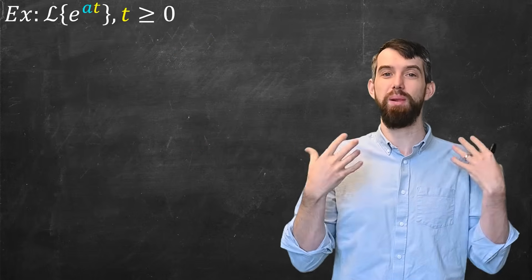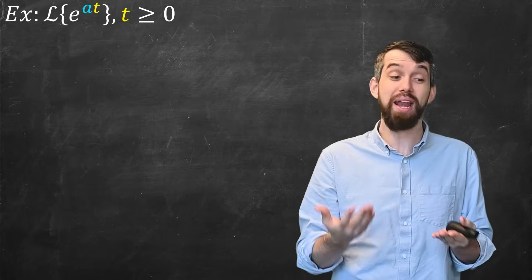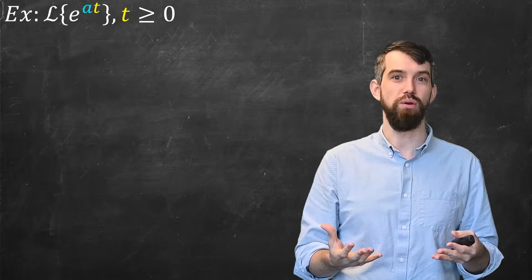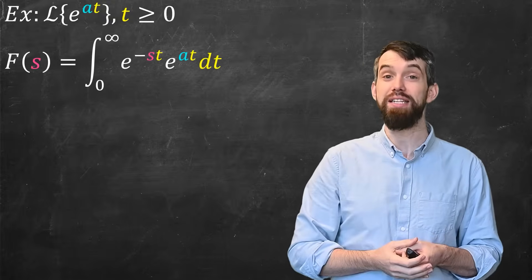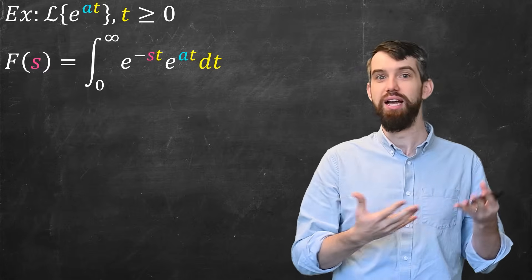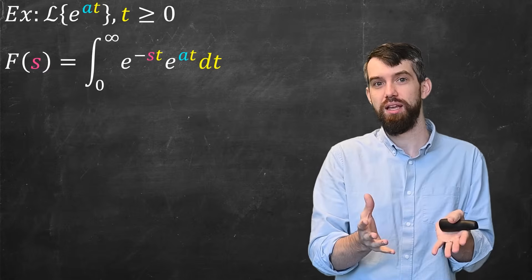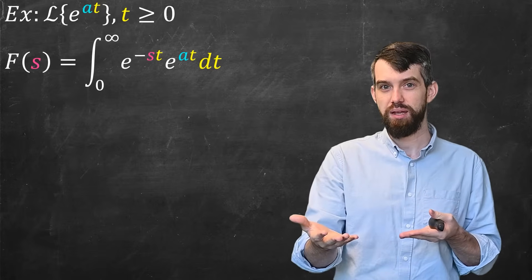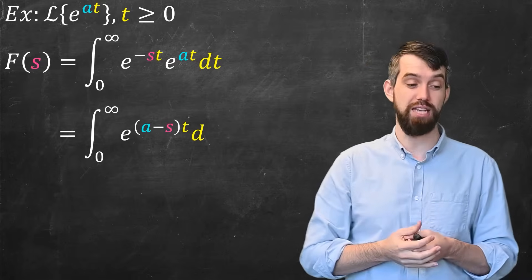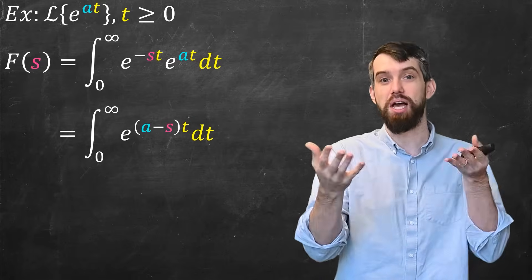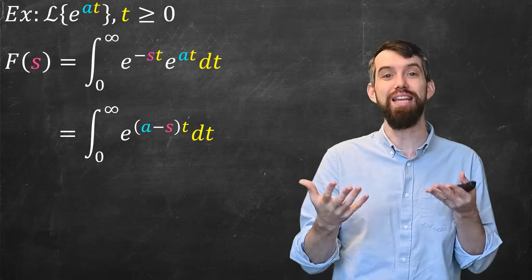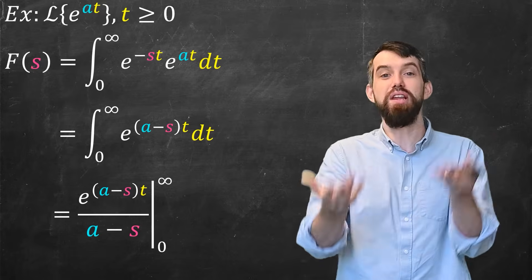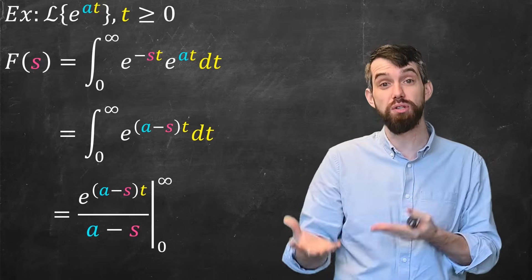The first example I want to begin with is just the Laplace transform of an exponential function — e^(at) where a is just some constant. So what's its Laplace transform? We can just simply write it down: this is the improper integral from 0 up to infinity of e^(−st) — I just copy that — and then for the f(t) I plug in e^(at). This gives two different exponentials, so I can combine them and make it just e^((a−s)t). This is a straightforward integrand, so when you integrate that you get e^((a−s)t) divided by (a−s), evaluated between 0 and infinity.